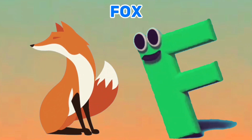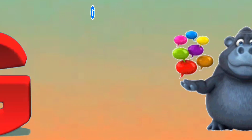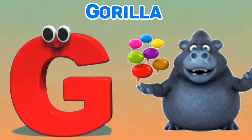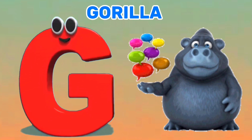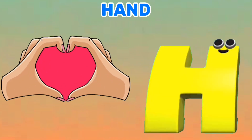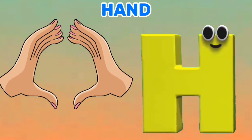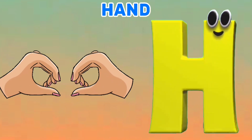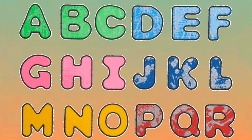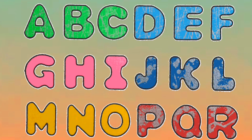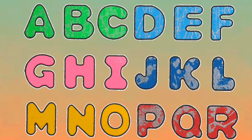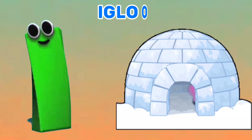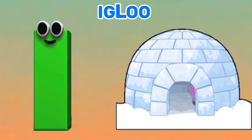F is for Fox. F, F. G is for Gorilla. G, G. H is for Hand. H, H. It's the letters of the alphabet — sing!